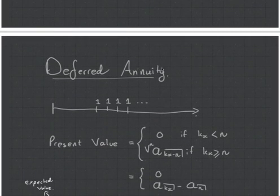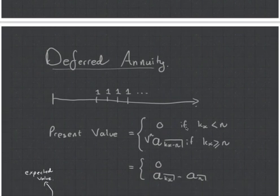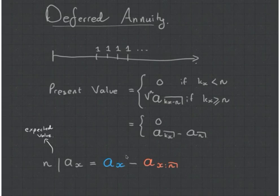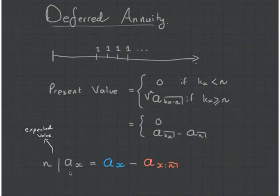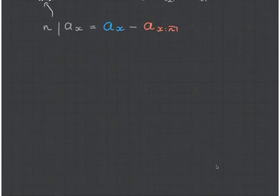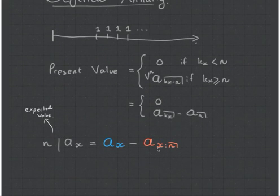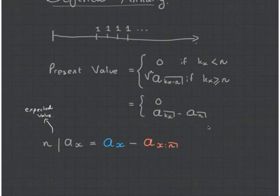Let's talk about deferred annuities. Deferred annuities are just like the assurance version — they kick in after a waiting period. They're basically made up of two things: the whole life, minus the term, and that gives you a deferred annuity. There is a better way to calculate this which we talk about in Chapter 3. Basically, instead of subtracting by the term annuity, you just take your whole life and you push it into the future with a v-term and a survival probability term. This makes it much easier to look up in the tables, but yeah, that's Chapter 3 — you can watch that video after this one.